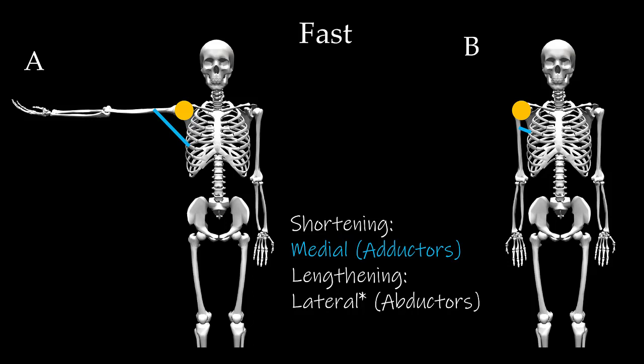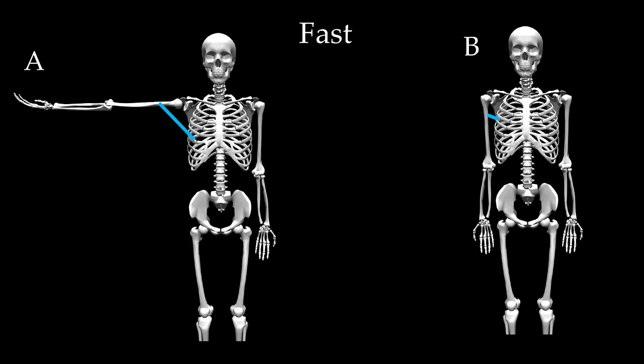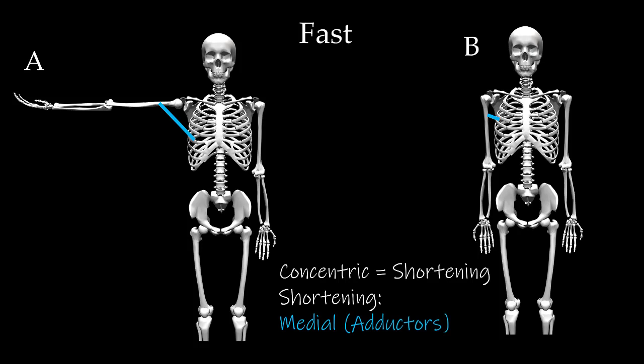Step 6 is to identify which MTCs must be producing or controlling the movement or position. Going from A to B fast, we are moving in the same direction as the external force, giving us a concentric MTC action. With concentric MTC actions, the controlling MTCs are those that are shortening — in this case, the MTCs on the medial side of the joint, or the glenohumeral adductors.